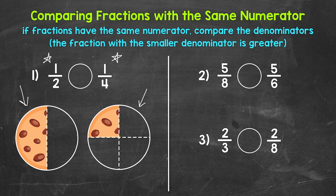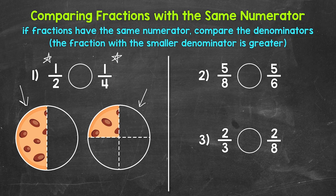Basically, when we have the same numerator, we can compare the fractions by looking at the denominators. The larger a denominator is, the more parts a whole will be divided into — therefore the parts are smaller. The smaller a denominator is, the fewer parts a whole will be divided into — therefore the parts are larger. So if we have fractions with the same numerator, the fraction with the smaller denominator is greater, because those equal parts of the whole are larger, giving us a greater portion of the whole. Our comparison symbol opens up towards whatever is greater, and we read this as one-half is greater than one-fourth.